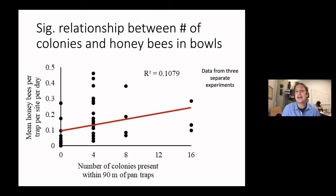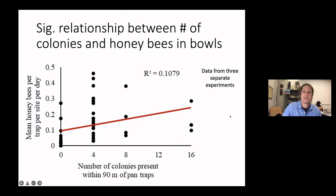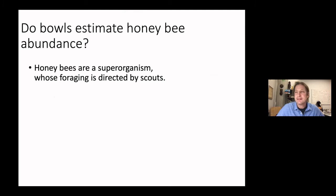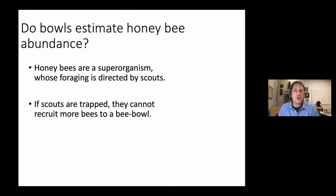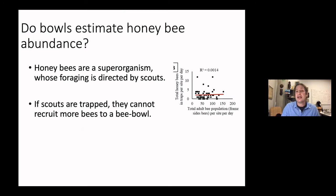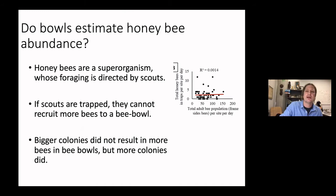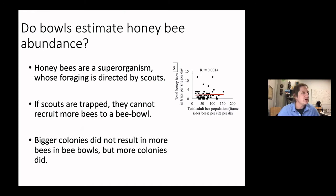So do bee bowls estimate honeybee abundance? We have to remember that honeybees are a super-organism whose foraging is directed by scouts. If scouts are trapped, they can't recruit more bees to a resource. So we don't see a change in captures based on total adult population in the colony. Bigger colonies don't result in more bees in the bee bowls, but more colonies do — because those colonies are sending out scouts that we think we're capturing, giving us an idea of honeybee activity in that adjacent field.